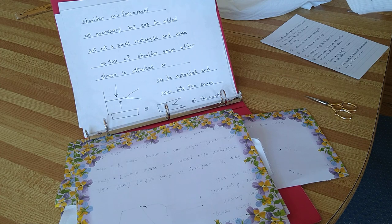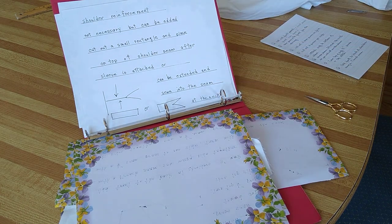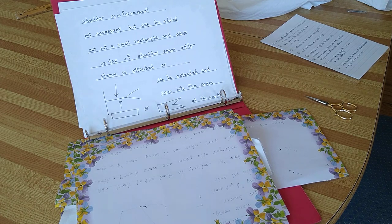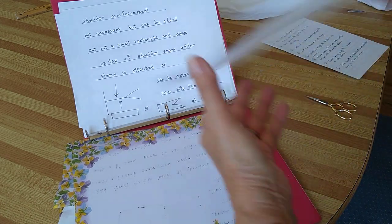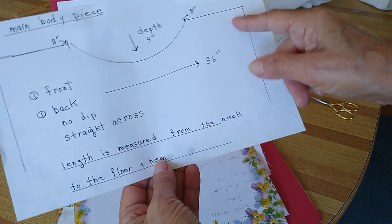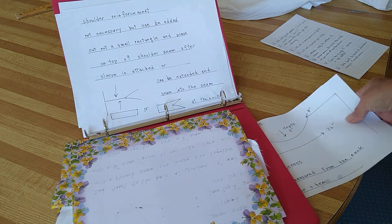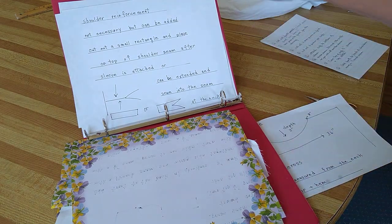Now you're going to sew those sides, the shoulder seams together to the main part, to the back, the front and back with a French seam. And then you can put a reinforcement on the top of that shoulder.